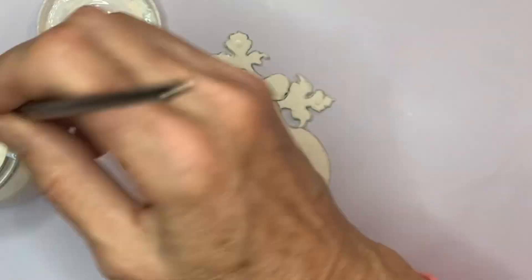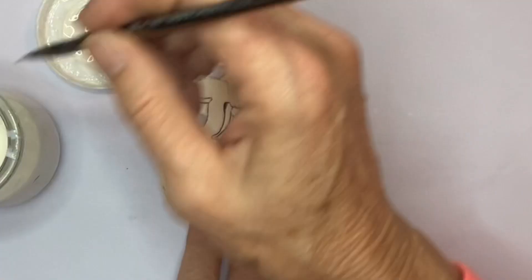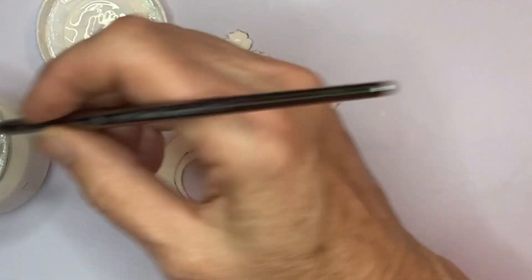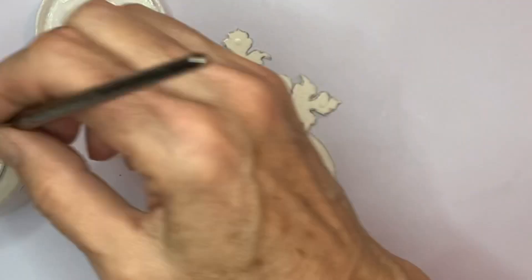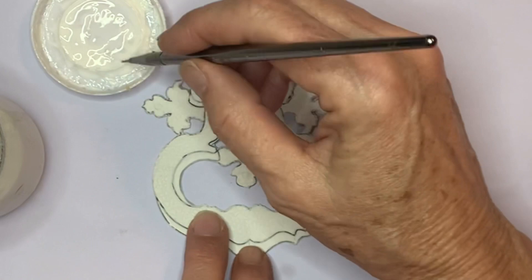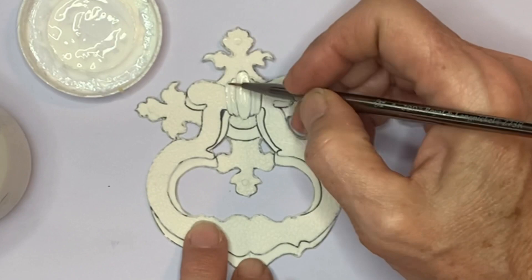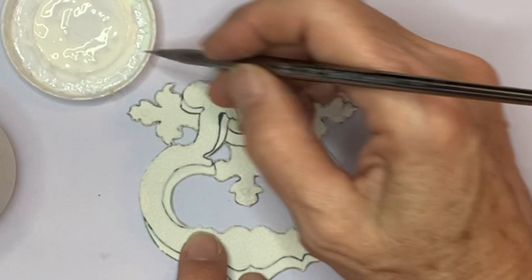Besides sealing the plate, polymer medium is used here to add the highlights. These areas will appear lighter when printed. And applying carborundum to define the shadows.